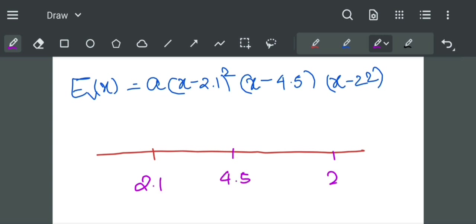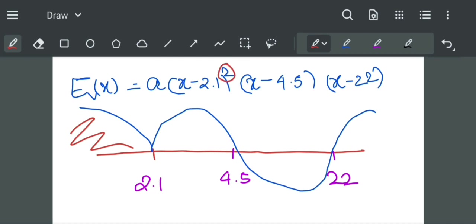By wavy curve method, the value of function will have a wave nature like this. This region is also positive due to the square of (x minus 2.1).